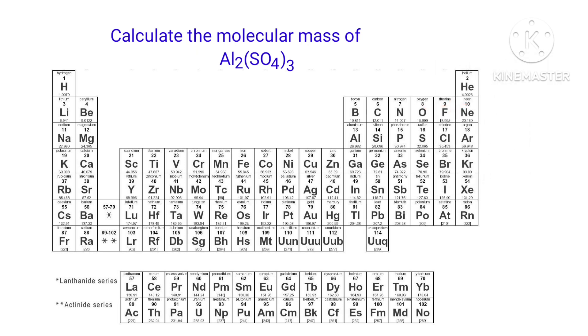In Al2(SO4)3 there are 2 Aluminium atoms, 3 Sulphur atoms, and 12 Oxygen atoms present.